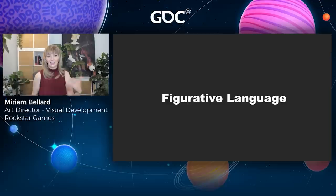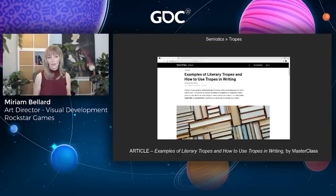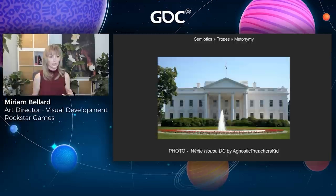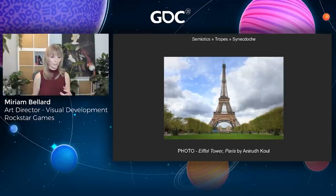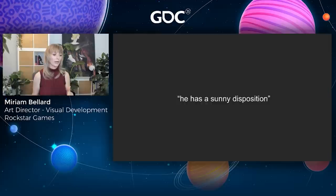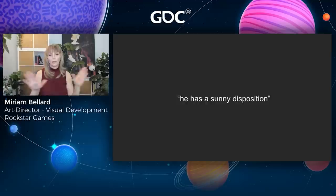There are many different examples of tropes in literary and semiotic theory. Metonymy is when you're referring to something that is related — you could use 'the White House' to refer to the US administration. Synecdoche is when you're using a part to refer to a whole — the Eiffel Tower to refer to Paris or France. Metaphor is when you are comparing two seemingly unrelated things: 'he has a sunny disposition' compares the sun and this person's disposition, adding shades of meaning to change how we see him.